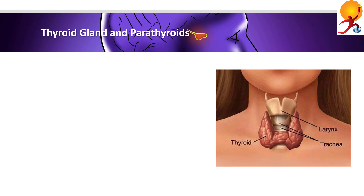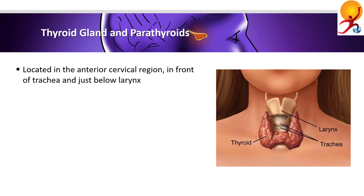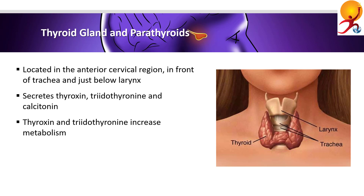The thyroid gland is located in the anterior cervical region — the frontal neck — in front of the trachea (windpipe) and just below the larynx (the sound box). It is a bilobed mass below the Adam's apple. It secretes thyroxine (T4), triiodothyronine (T3), and calcitonin. T3 and T4 act to increase the cellular metabolic rate of the body, controlling respiration and metabolism of proteins and lipids. Goiter is the abnormal enlargement of the thyroid gland and can occur as a result of hypothyroidism.